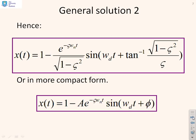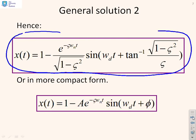Putting all that together, here is the general solution. With zero initial conditions and using the normalised form with damping ratio and natural frequency, the solution is expressed entirely in terms of ζ and ωn. We can now substitute in whatever ζ and ωn we want into this formula to get the solution we need.